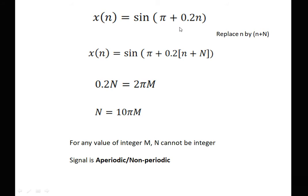Next: x(n) = sin(π + 0.2n). Note that π here is a phase value, not a frequency term. We consider only the n-dependent term. Replacing n by n + N and equating 0.2N = 2πm gives N = 10πm. For any integer m, N = 10πm cannot be an integer due to the π factor. Therefore the signal is aperiodic in nature.